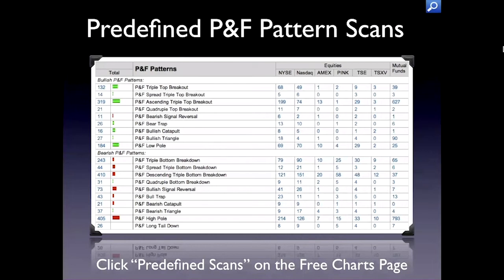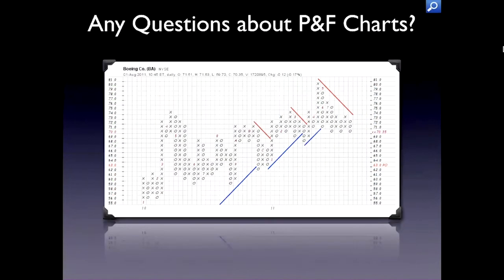Chart School has all of these patterns described clearly. On the free charts page or members page, go to the predefined scans area, scroll down, and you'll find automatically detected PNF patterns for both bullish and bearish patterns. You can get a sense of the market just by looking at these — if there are lots of bullish patterns and green, the market's doing well; if there's lots of red and not much green, that particular pattern is doing less well. They're broken up into bullish and bearish to help you.